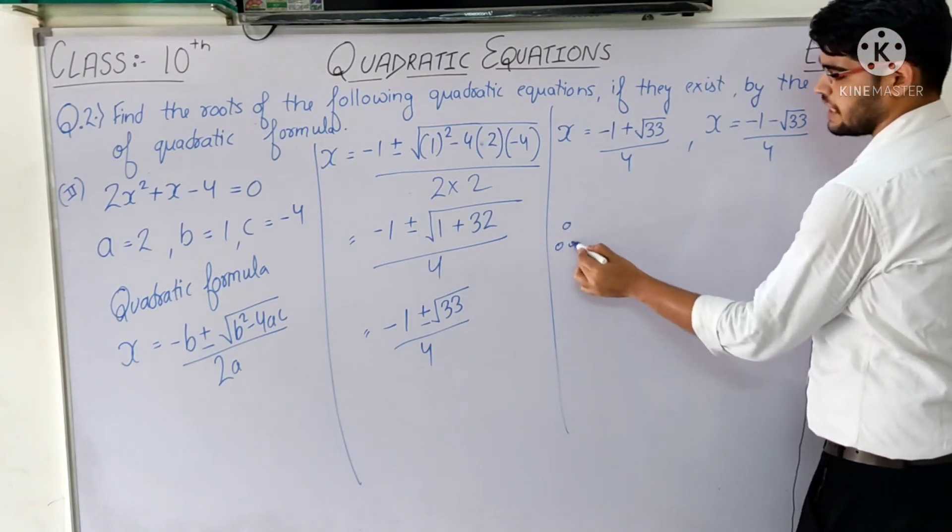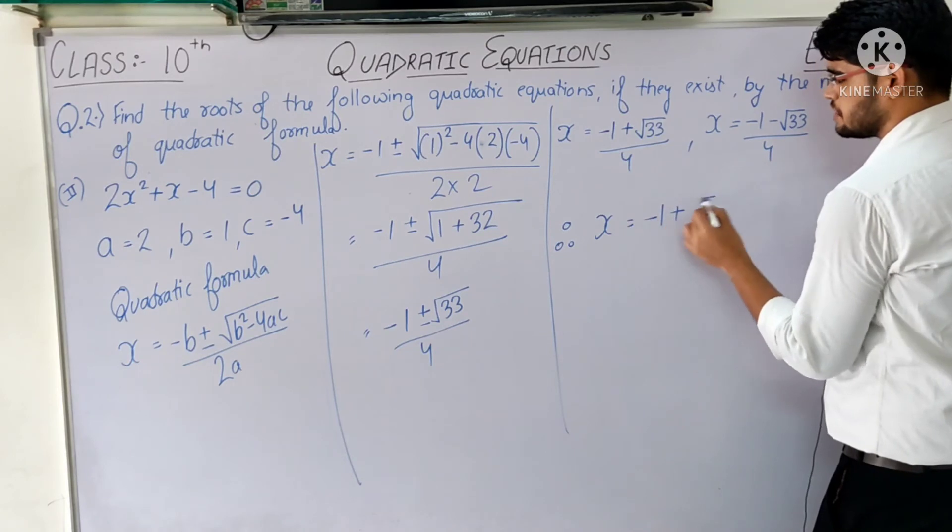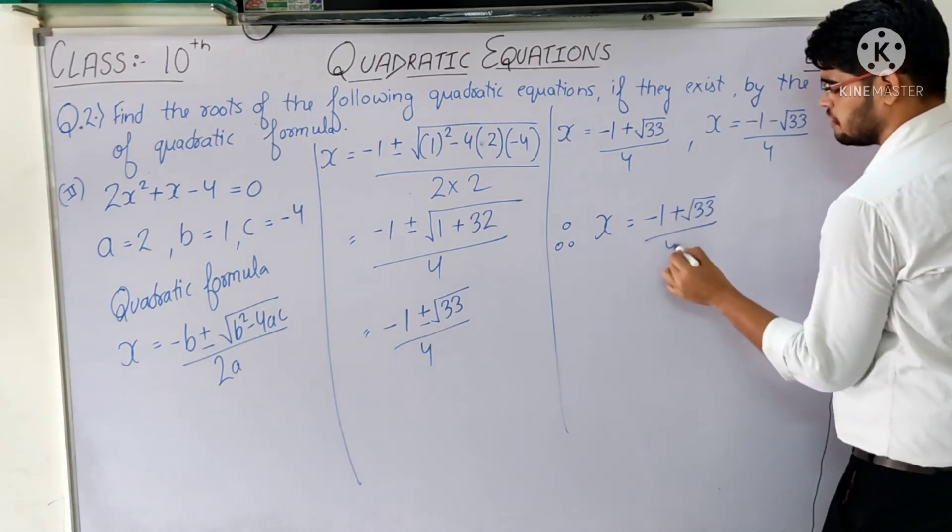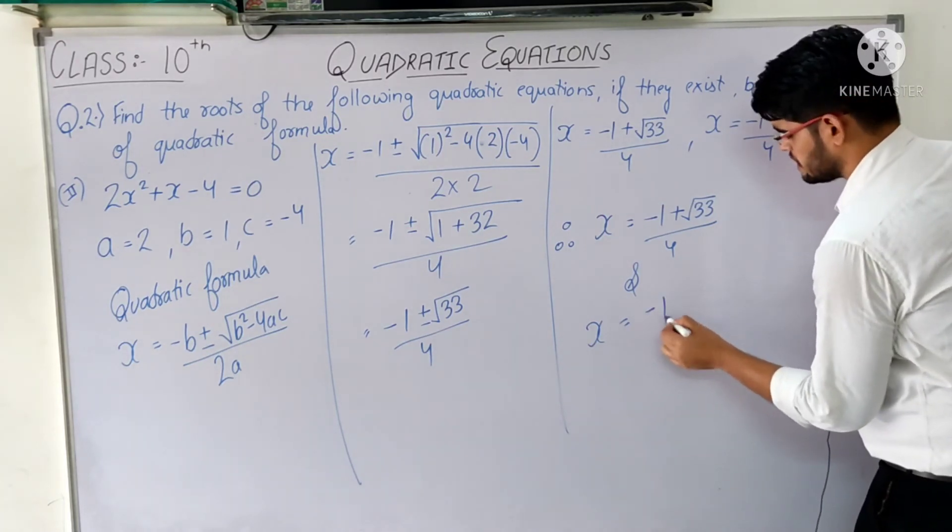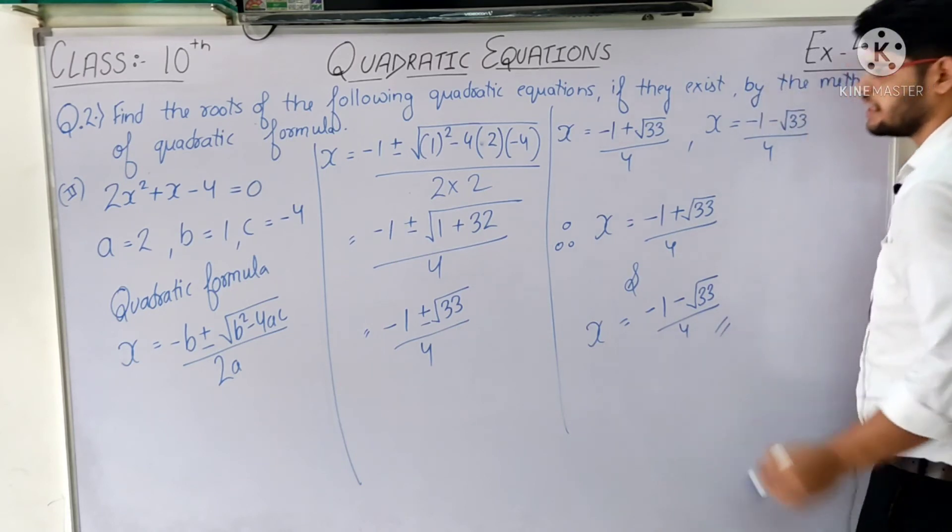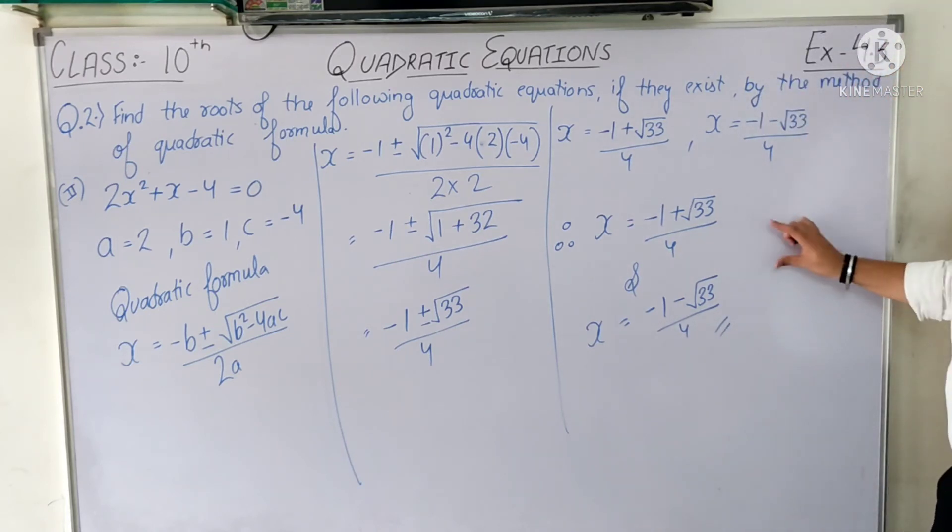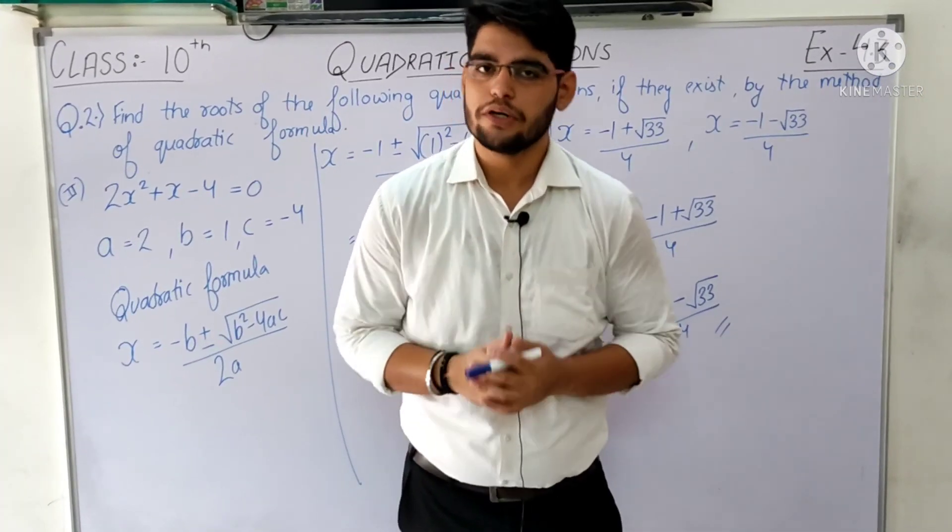Therefore, finally, x = (-1 + √33) / 4, and the second value of x is (-1 - √33) / 4. These are the two values of x by quadratic formula. So this completes the second part of question number 2.